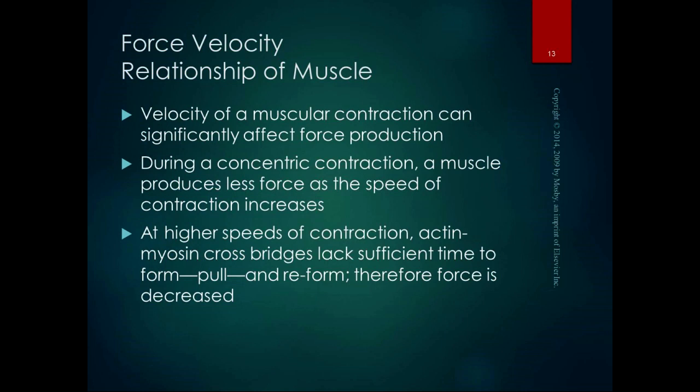Now we're going to talk about the force-velocity relationship of muscle. The velocity of a muscle contraction can significantly affect force production. During a concentric contraction, a muscle produces less force as the speed of contraction increases. At the molecular level, at higher speeds of contraction, the actin-myosin crossbridges don't have time to form, pull, and reform, and therefore the force is decreased. If it's a slower contraction, the actin-myosin crossbridges have time to form, pull, and reform, increasing force. A higher speed contraction is going to produce less force because of the time that the actin-myosin need to make those crossbridges.